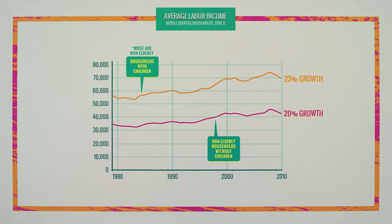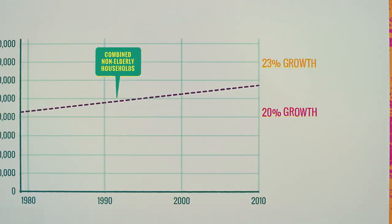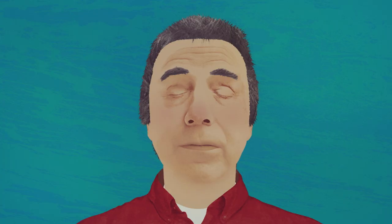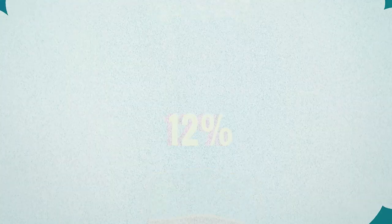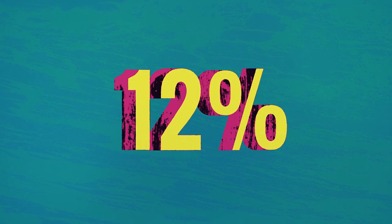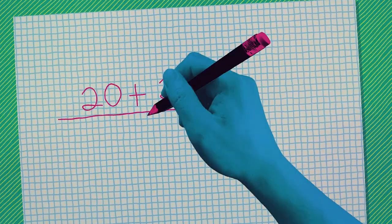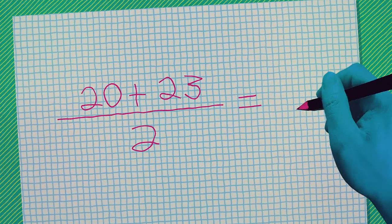But what if you didn't look at the two groups separately? What if you looked at the non-elderly as a single group? You'd think it'd be the average of the changes for the two groups — something between 20 and 23%. But it isn't. The answer's going to blow your mind. It's 12%. Well, that's got to be a mistake, right? If one group goes up by 20% and the other goes up by 23%, then the percentage change for the two groups combined has to be between 20 and 23 — right? But it doesn't.